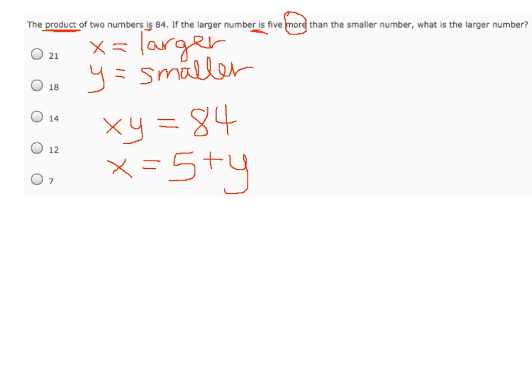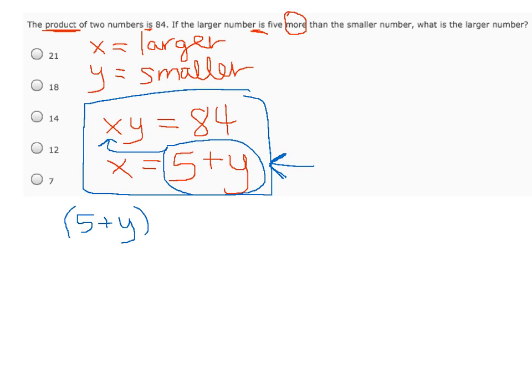Now we have our two equations, and we can solve using substitution. Notice that we already have one equation where a variable is by itself on one side of the equation. We can take what x equals, x equals five plus y, and substitute that in for x in this top equation. If we plug five plus y into that top equation, we'll have five plus y, times y, equals 84.